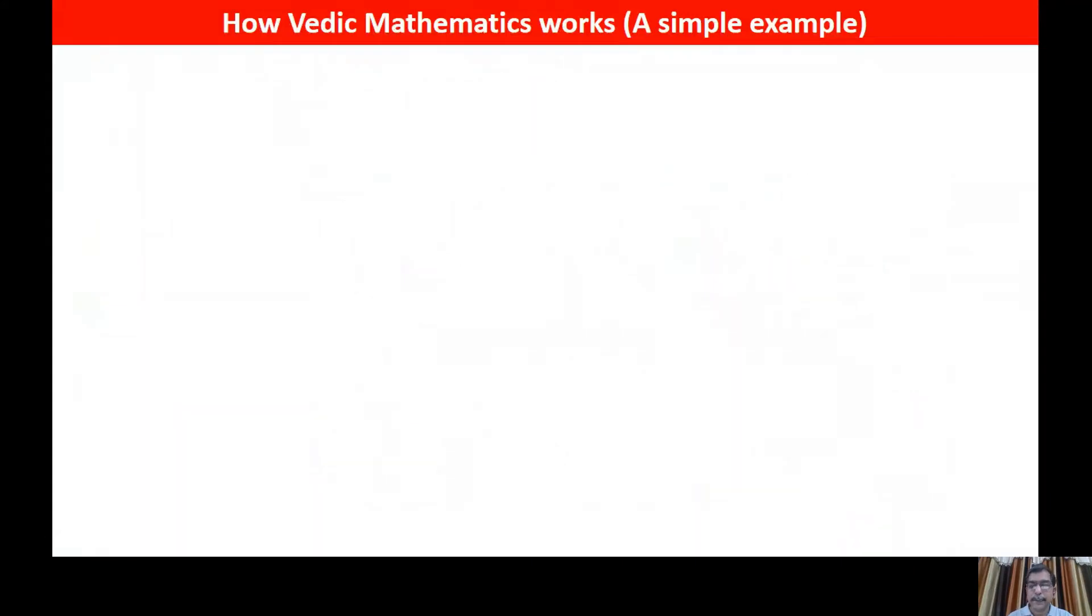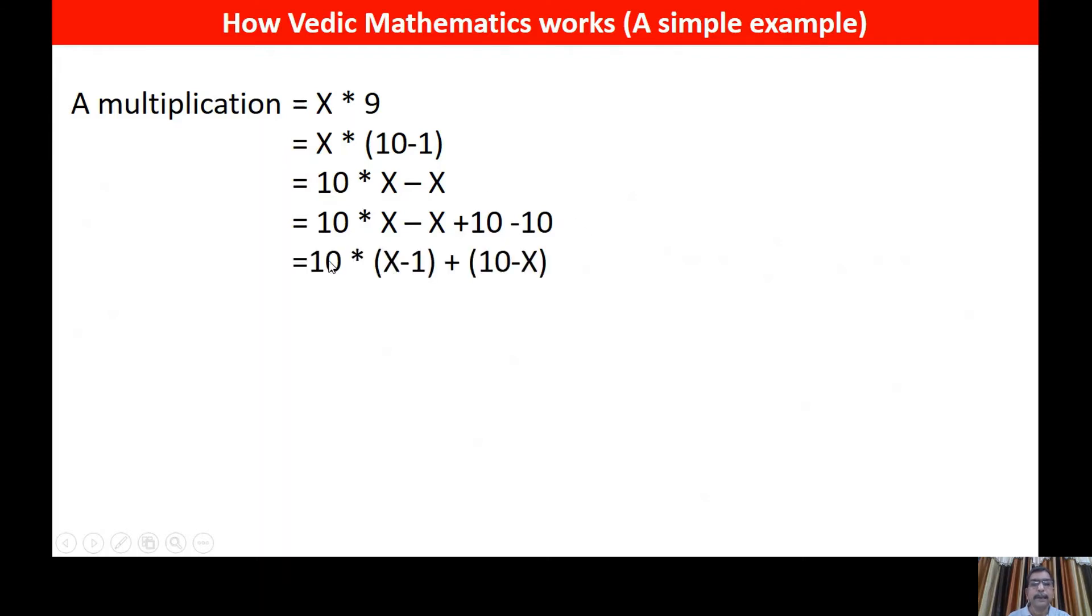For example, how Vedic mathematics works, a simple example. Let us see if we want to multiply a single digit number X by 9. So how we can write it? We can also write it by X multiplied by 10 minus 1. We can write 10X minus X. We can add 10 and subtract 10 and then rearrange the whole, all the terms in such a fashion that we get this expression.